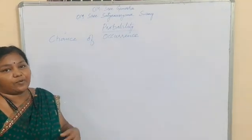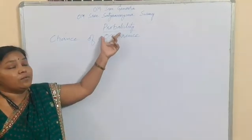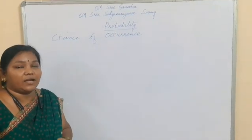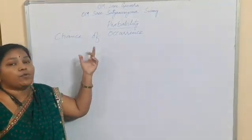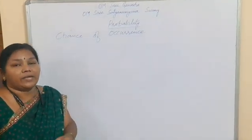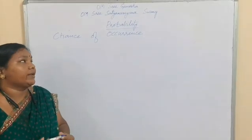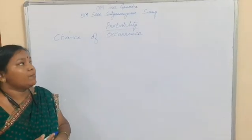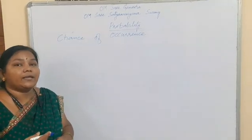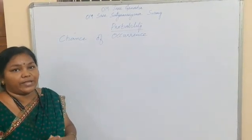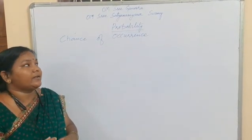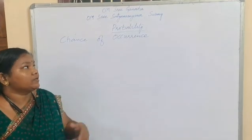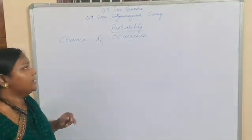Today's topic is probability. Probability means it is the chance of occurrence. For example, probably it may win today. Another example is probably India may win the match today — that is, there are chances of winning the match. That is called as probability.